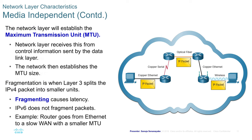The network layer establishes the maximum transmission unit (MTU), receiving this from control information sent by the data link layer. Fragmentation is when layer 3 splits the IPv4 packet into smaller units. Fragmenting causes latency, and IPv6 does not fragment packets. For example, if a router goes from Ethernet to a slower WAN link with a smaller MTU, that will result in fragmentation.